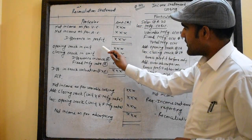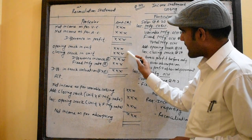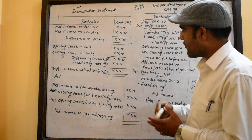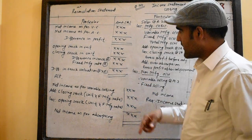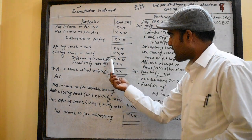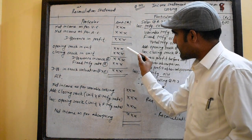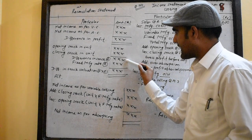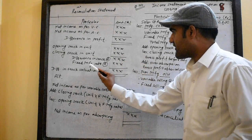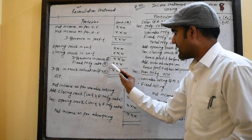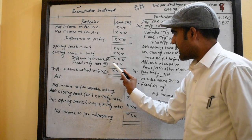You can use the opening stock and the closing stock. This difference is the unit — this method is different from opening and closing. Then you can use the fixed amount of manufacturing.